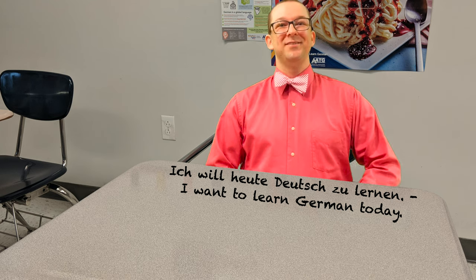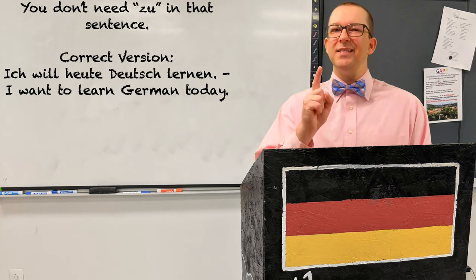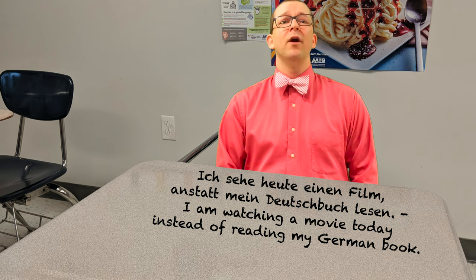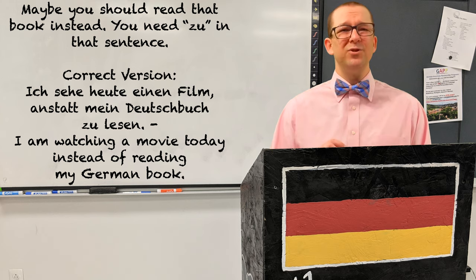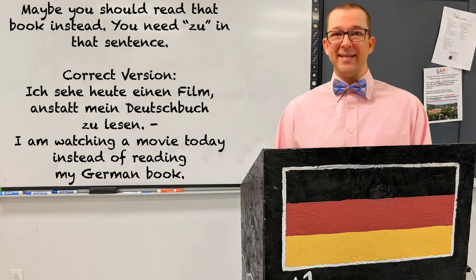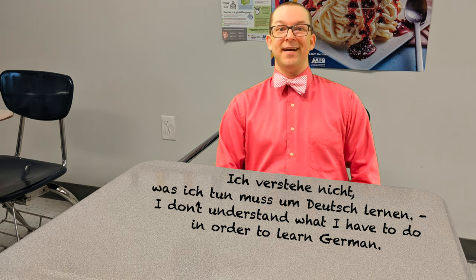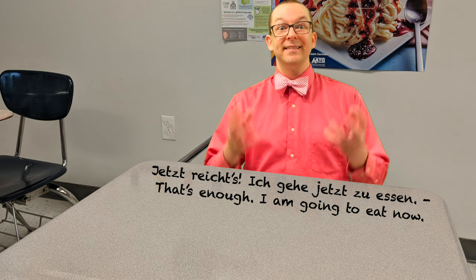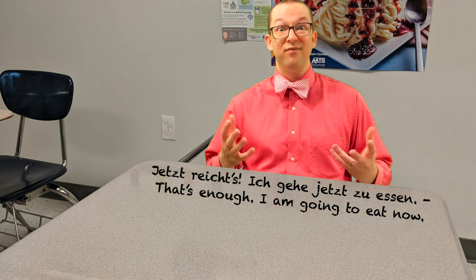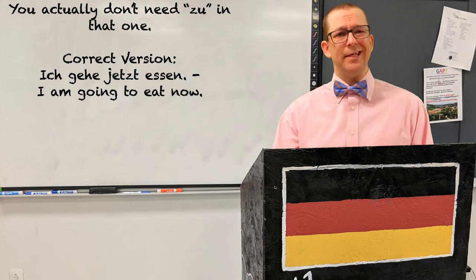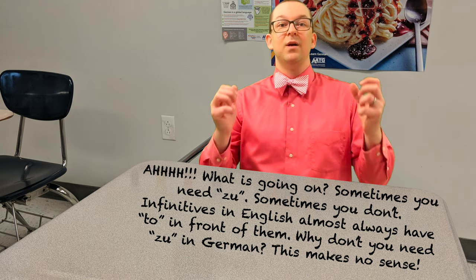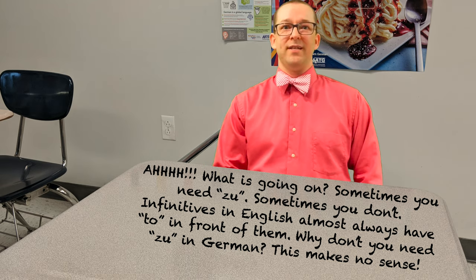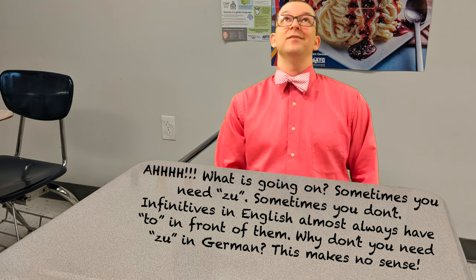Ich will heute Deutsch zu lernen — I want to learn German today. You don't need 'zu' with that sentence. Ich sehe heute einen Film anstatt mein Deutschbuch lesen — I am watching a movie today instead of reading my German book. You need 'zu' in that sentence. Ich verstehe nicht, was ich tun muss und Deutsch lernen — I don't understand what I have to do in order to learn German. You need 'zu' in that one too. Jetzt reicht's. Ich gehe jetzt zu essen — That's enough. I'm going to eat now. You actually don't need 'zu' in that one. Sometimes you need 'zu', sometimes you don't.